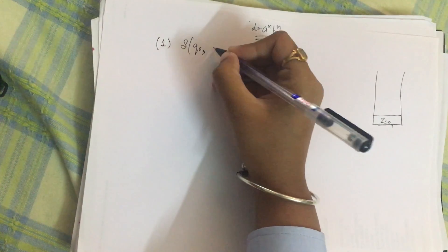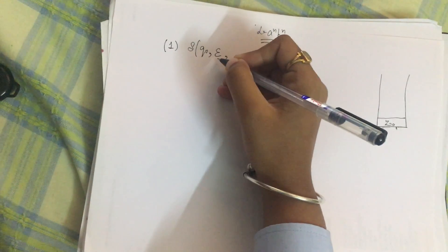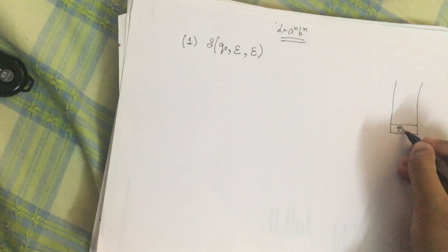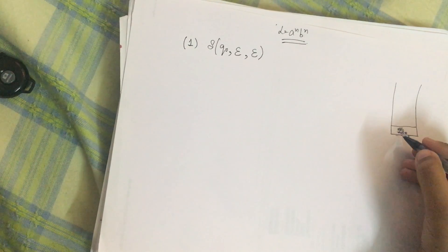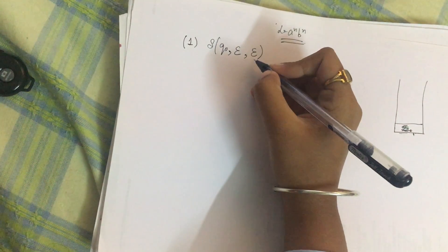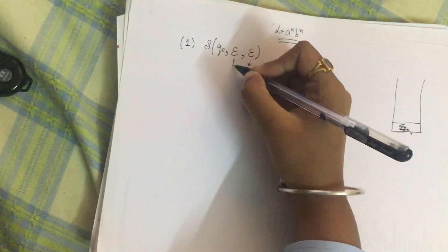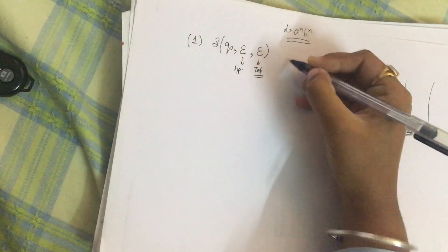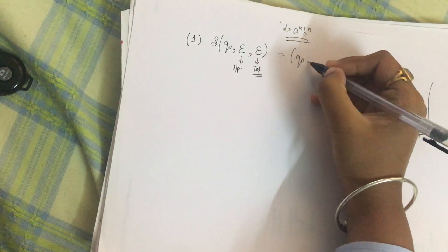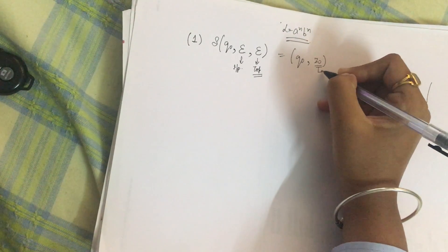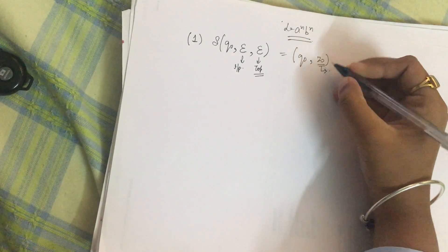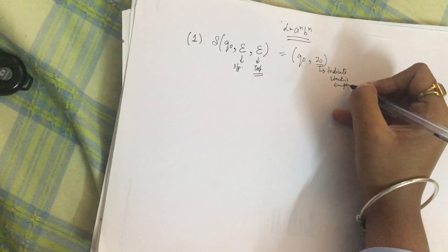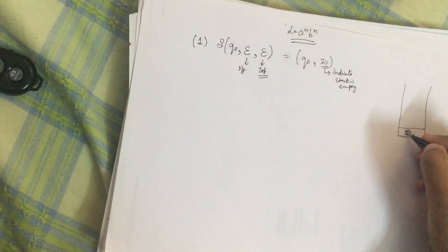The first transition for every pushdown automata starts from state q naught. The input symbol is null — we are not giving any input symbol — and the value at the top of the stack before z naught is put in is also empty. This transition leads to state q naught, indicating the stack is empty.